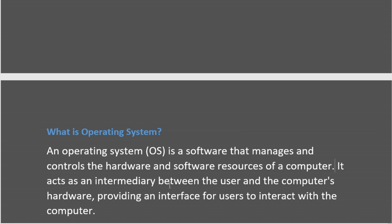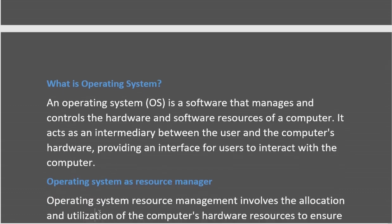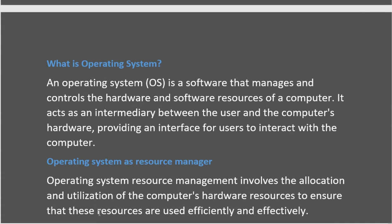The operating system acts as an intermediary between the user and the computer's hardware. It plays an important role such that the user can interact with the computer system — it provides an interface to the user for that purpose. Now, what type of resources does the operating system manage, how does it manage them, and which are the important resources in our computer system that have to be managed by the operating system?